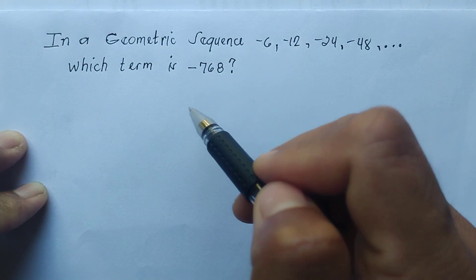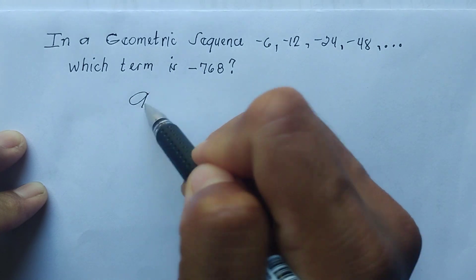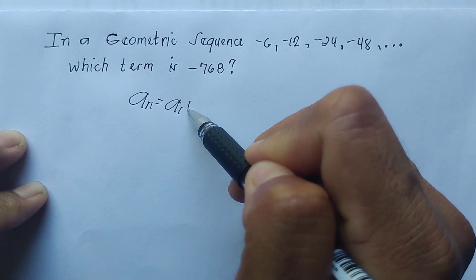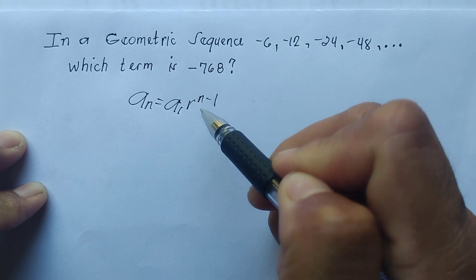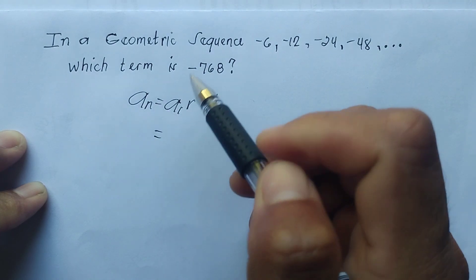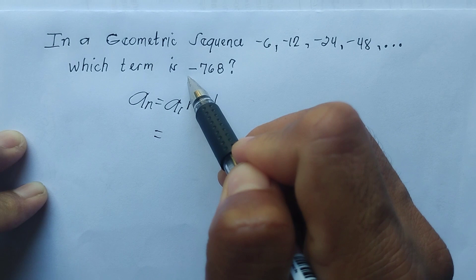To look for that we need to apply the formula: a sub n equals a sub 1 times common ratio raised to the power of n minus 1. Since we already have the last term, because that's what the problem is asking, we need to write it here: -768.